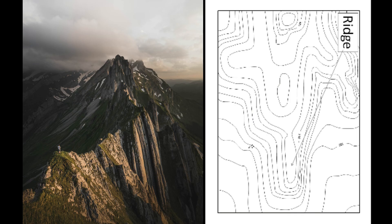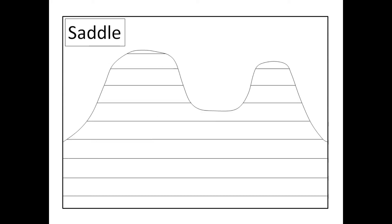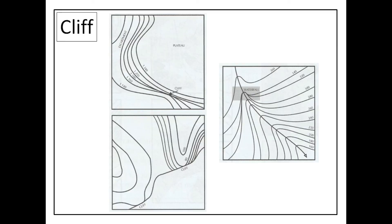The next physical feature is a saddle. We have lower-lying areas, then we go up — there's a hill at 200 and higher — but then the land dips down and rises again. Looking at it from the side, please note that the saddle is that dip in the middle between two higher areas.